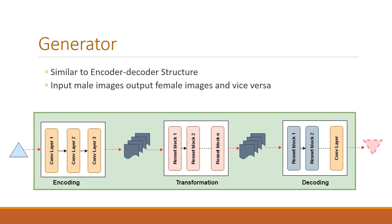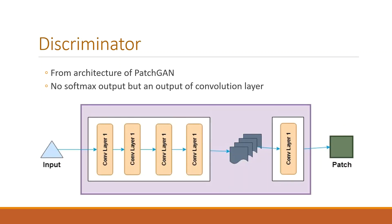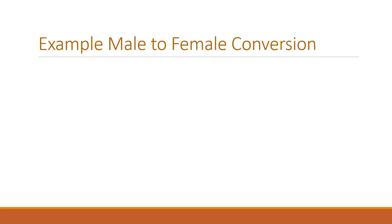The main advantage of CycleGAN is that it does not require pairs of images. The architecture of a CycleGAN consists of two generators and two discriminators. The task of the generator is to produce fake images of males and females that are as similar as possible to the real images. The task of the discriminator is to distinguish between the generated fake images and real images.